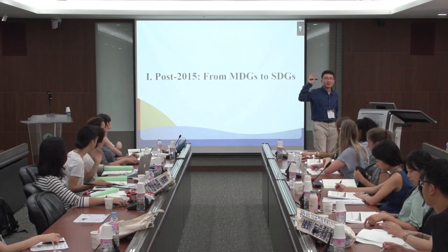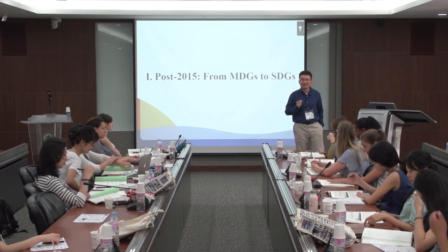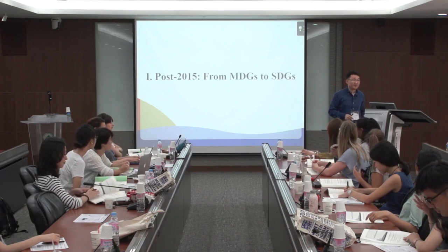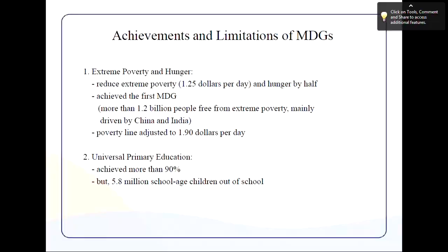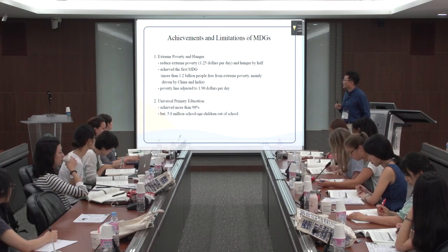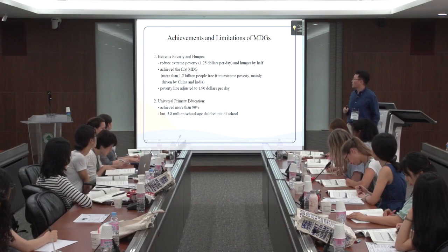MDG number one is extreme poverty and hunger. In September 2000, when the UN General Assembly gathered in New York City, heads of state from 189 countries signed the UN Millennium Declaration, committing to achieve eight Millennium Development Goals by 2015. The first goal was to reduce extreme poverty and hunger, using 1990 as the baseline, aiming to cut extreme poverty by half by the end of 2015.